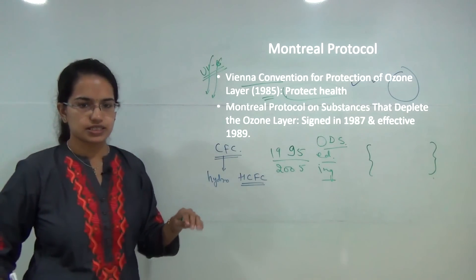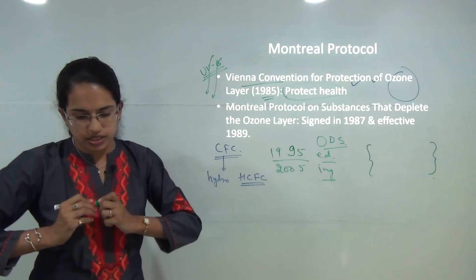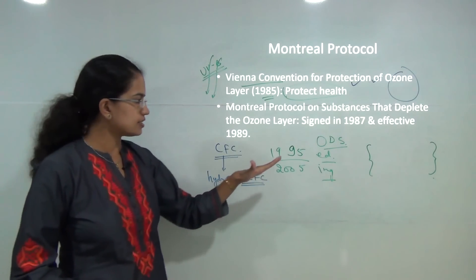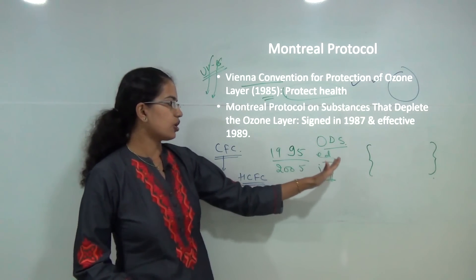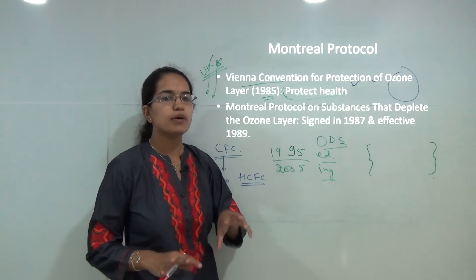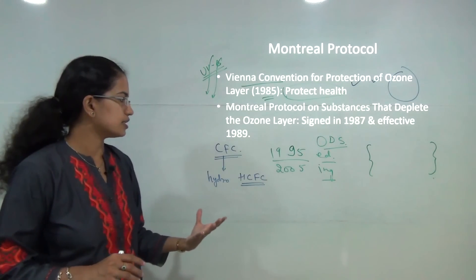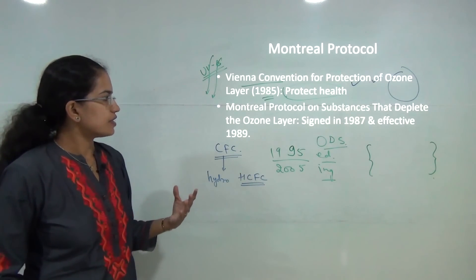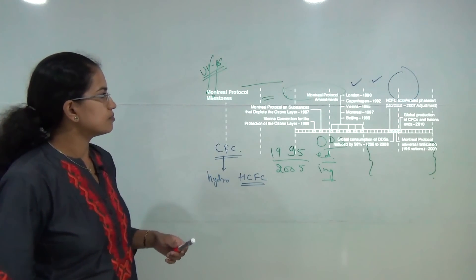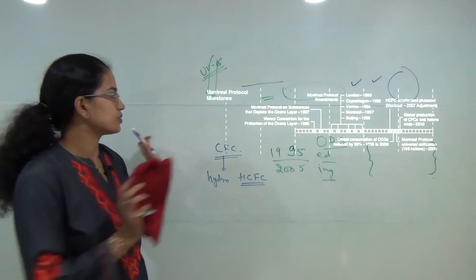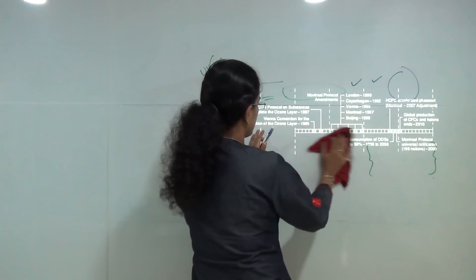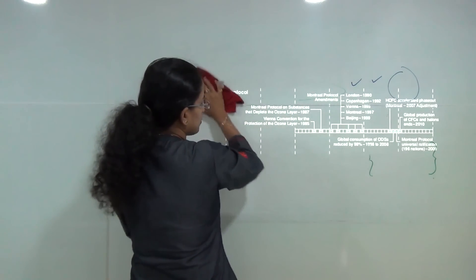Later there was a ban on CFCs, talking about complete removal of chlorofluorocarbons from refrigeration and aerosol industries. Among the key developments, the process started with the Vienna Convention, then the Montreal Protocol and its five amendments.